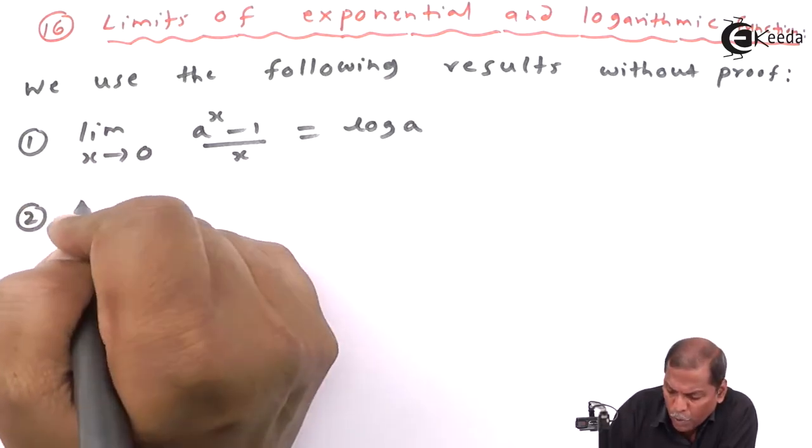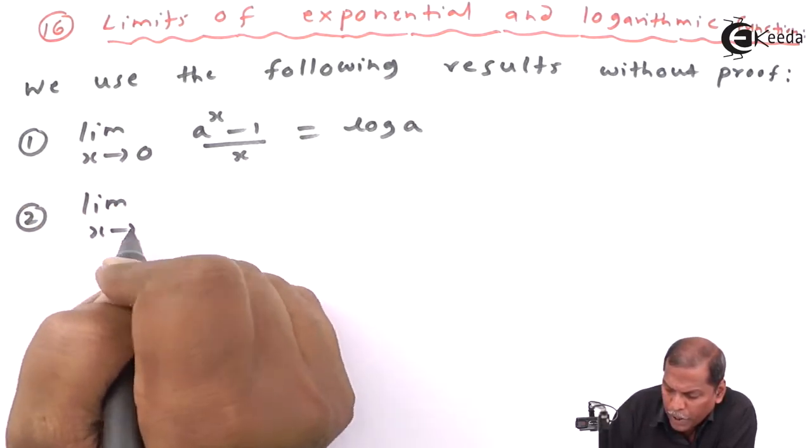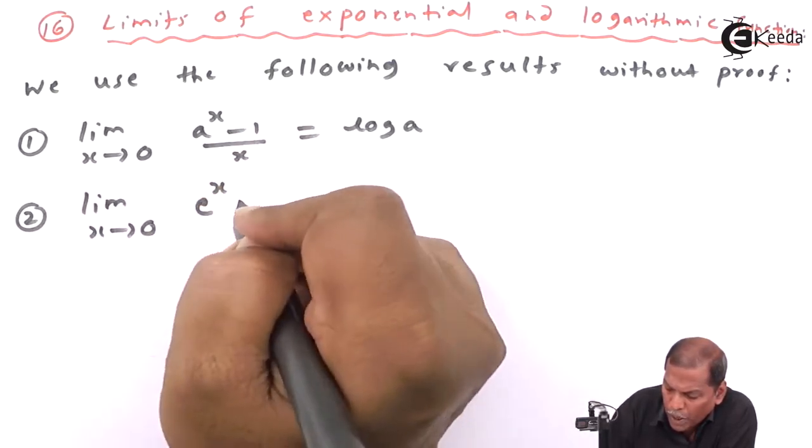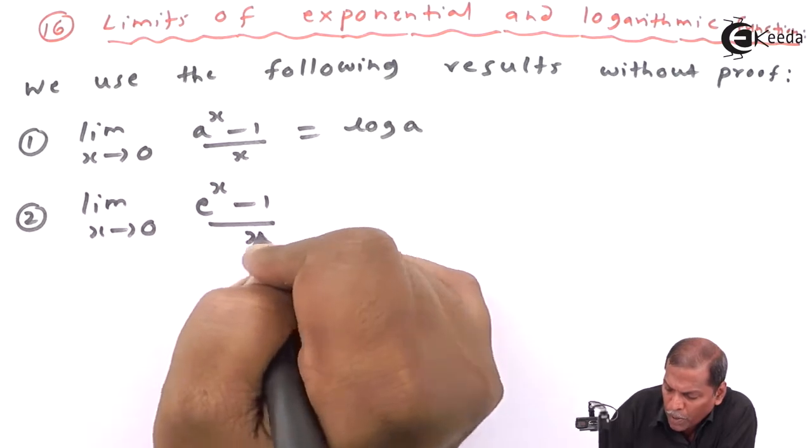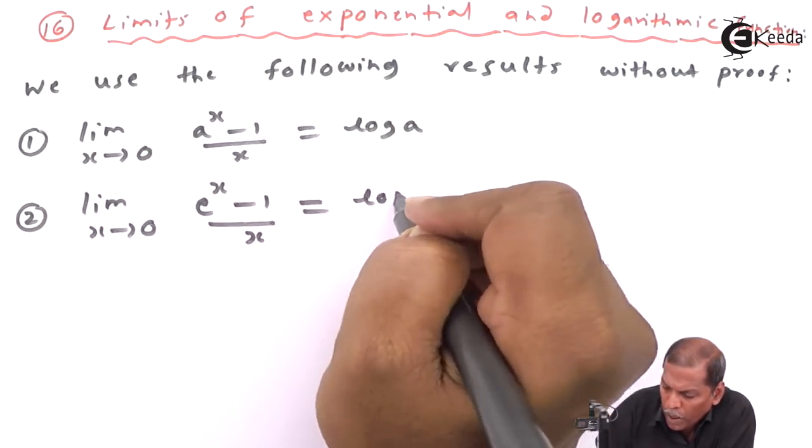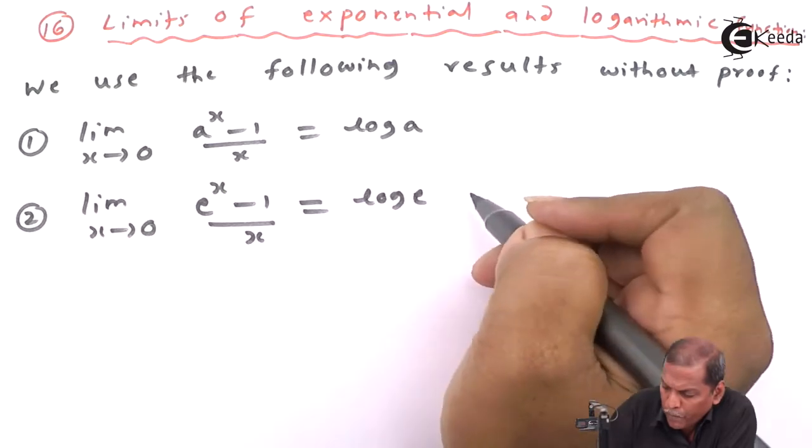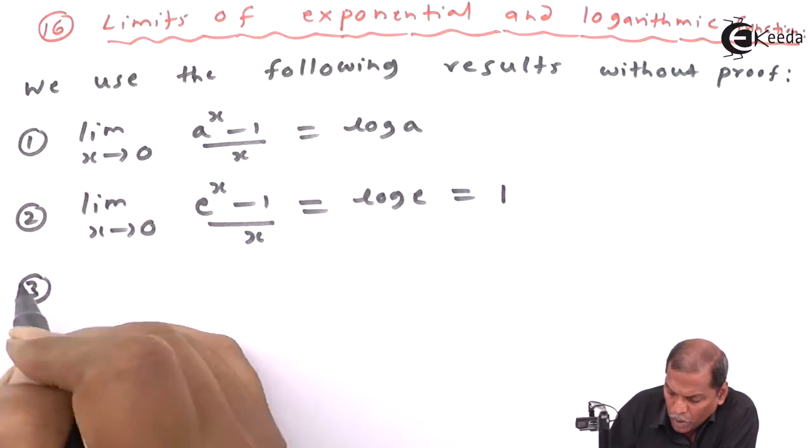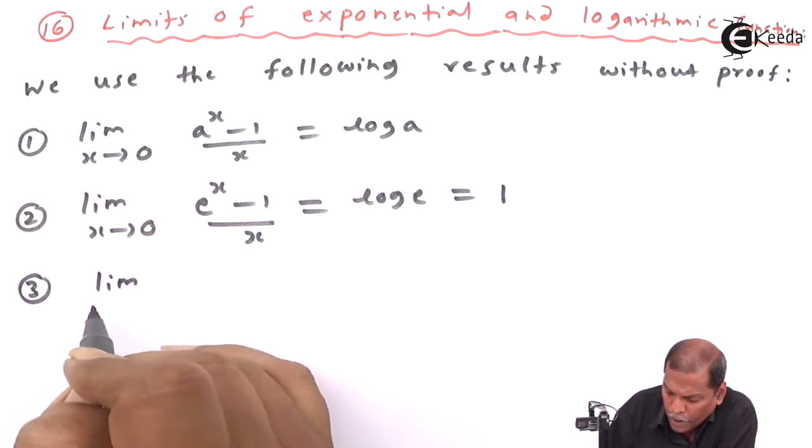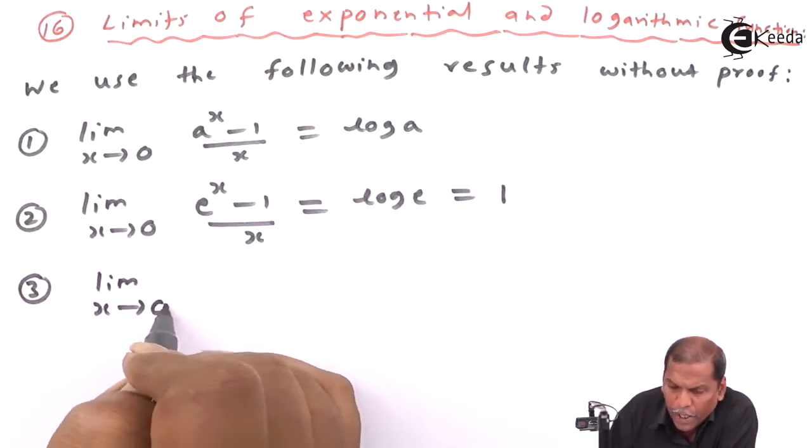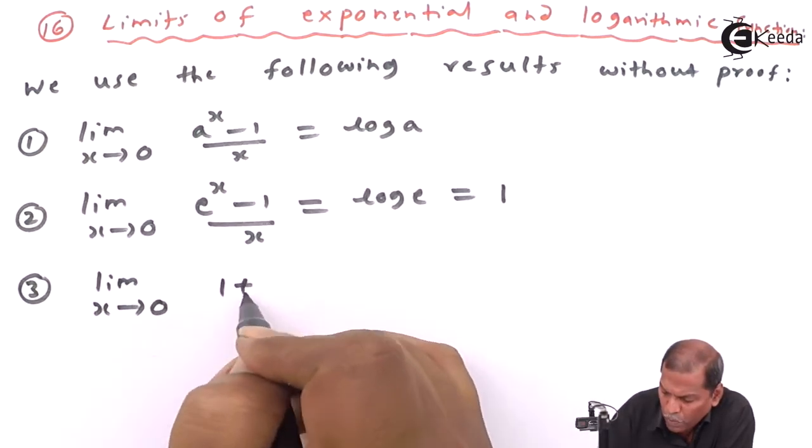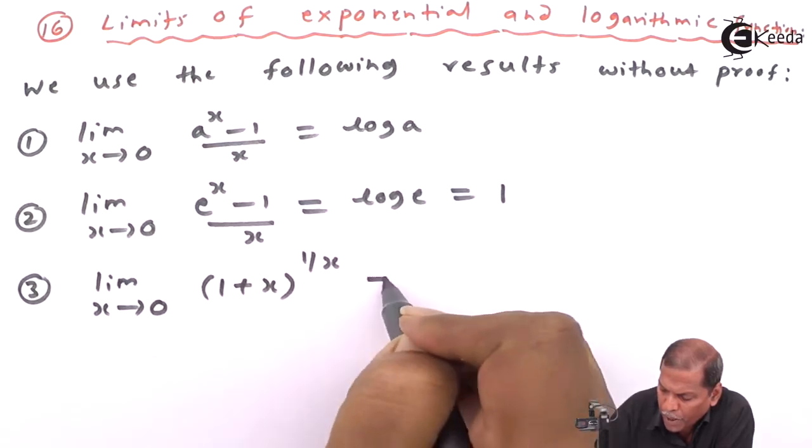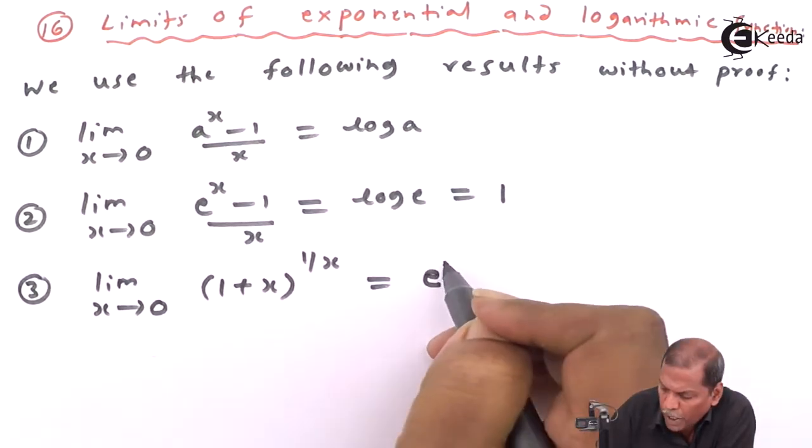Result number two is: limit as x approaches zero of (e^x - 1)/x equals log e, which equals one. Result number three is: limit as x approaches zero of (1 + x)^(1/x) equals e^k.